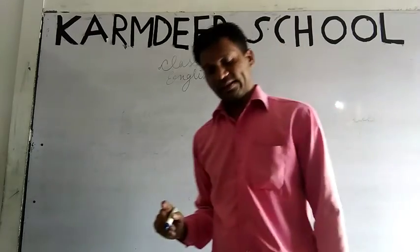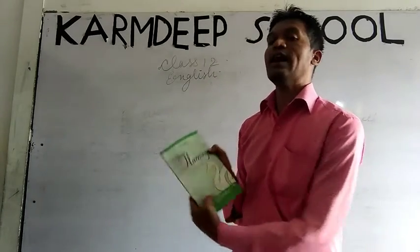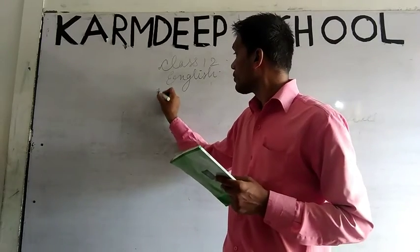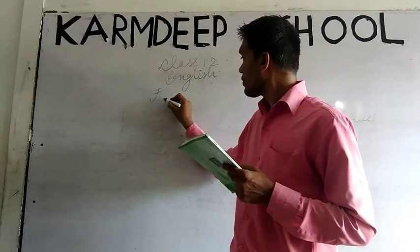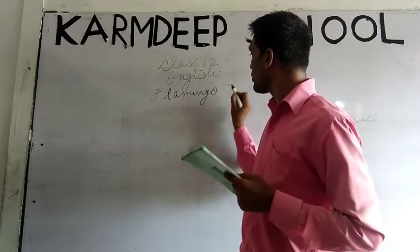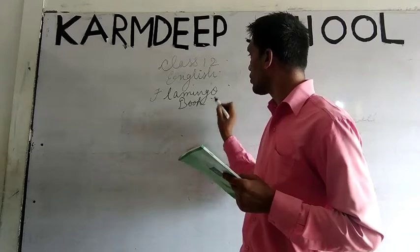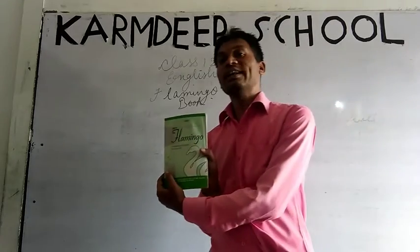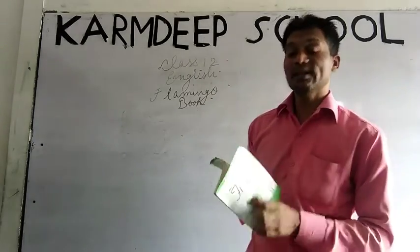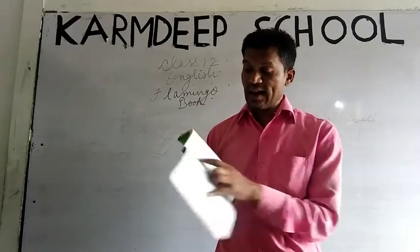First chapter from your Flamingo book, I will explain the summary. This is your English literature book. Chapter first: The Last Lesson. Open it, all students — The Last Lesson.